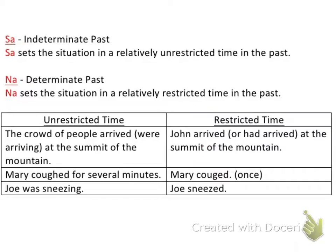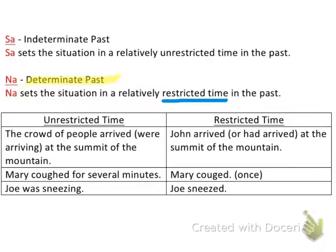Now getting to the core of the video: sa and na. 'Sa' is the indeterminate past. What does that mean? Indeterminate past is set in a situation that is relatively unrestricted time. I like to think of 'sa' as unrestricted time. Then 'na' is the determinate past, set in a relatively restricted time. So both are past tense — the difference is that indeterminate past is unrestricted time and determinate past is restricted time.